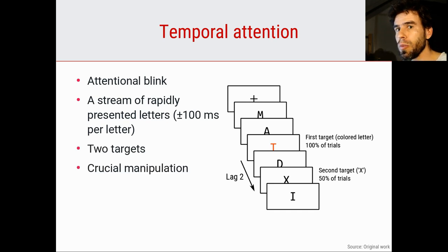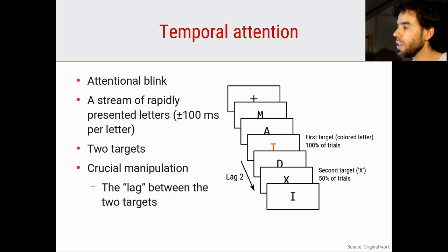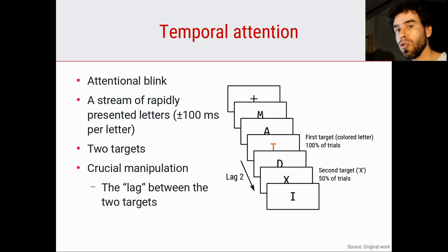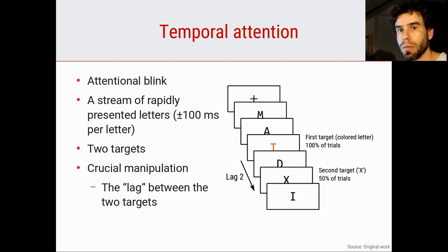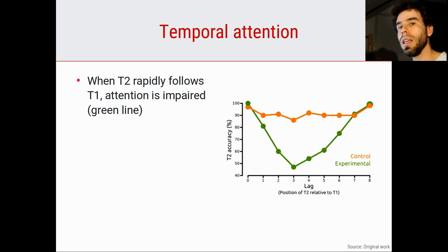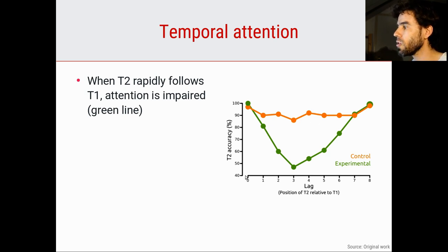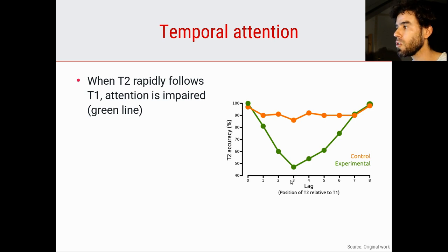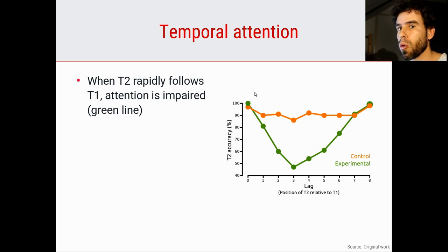There are two targets, and there is a crucial manipulation: the lag between the two targets. In between T1 and T2 there is a distractor — an irrelevant letter. We call this lag 2 because there is a displacement of two positions between the T and the X. On some trials these displacements will be longer, and on some shorter — we vary the distance in time between the first and the second target. What you generally find is the following: if T2 rapidly follows T1, attention is impaired. On the X axis you see the lag, and on the Y axis the accuracy of reporting the second target, given that participants reported the first target correctly.